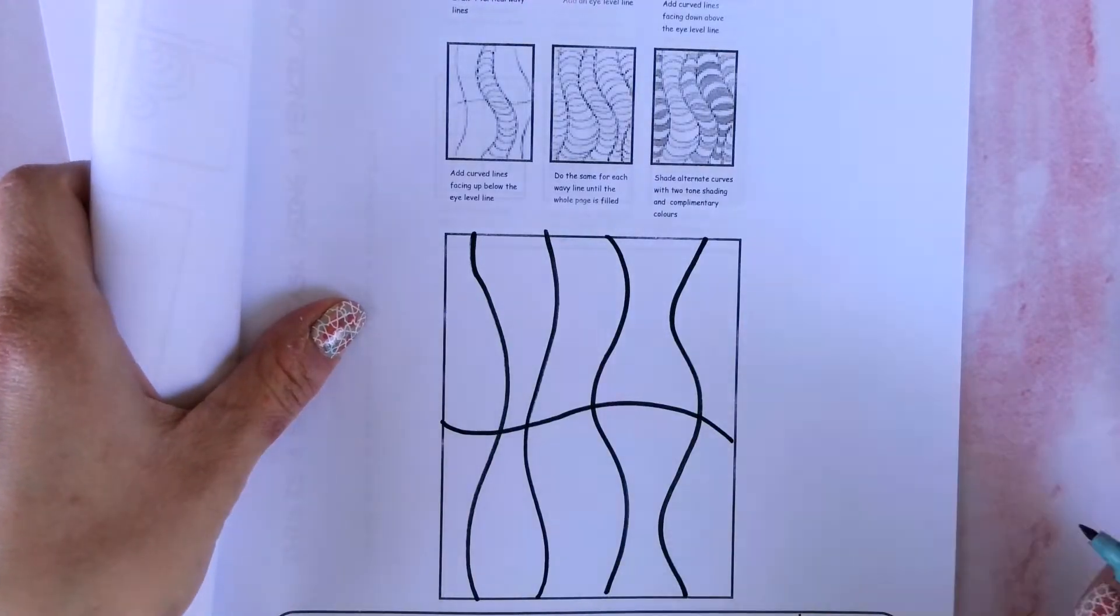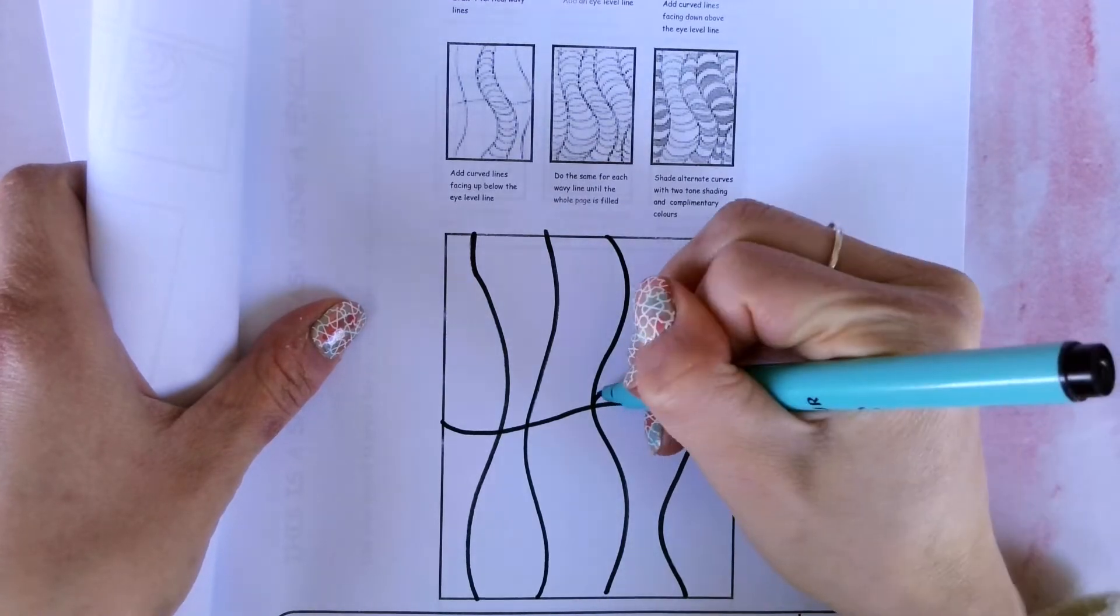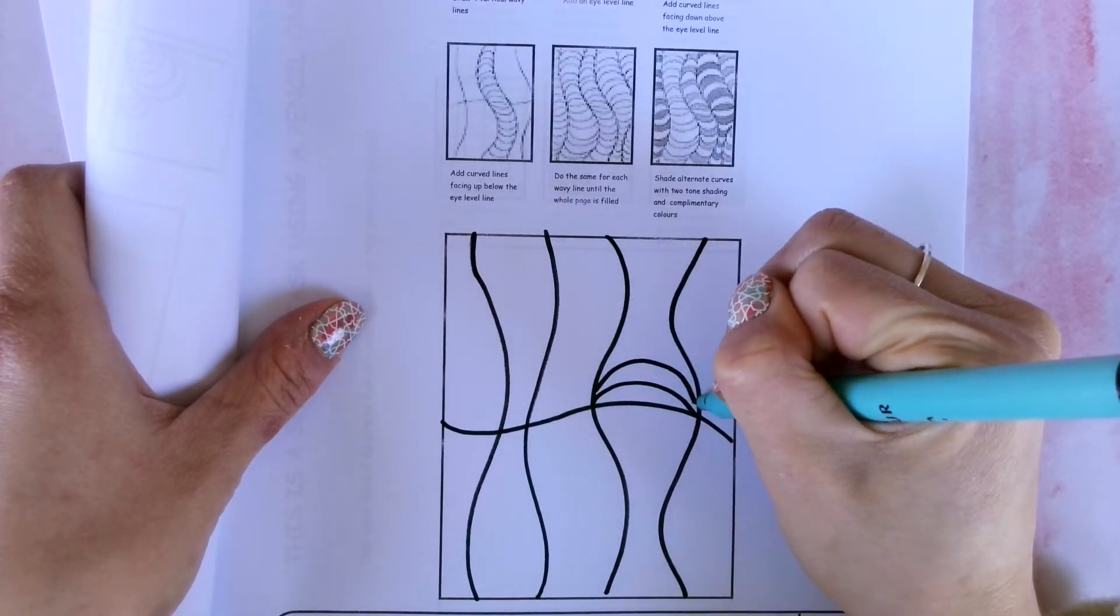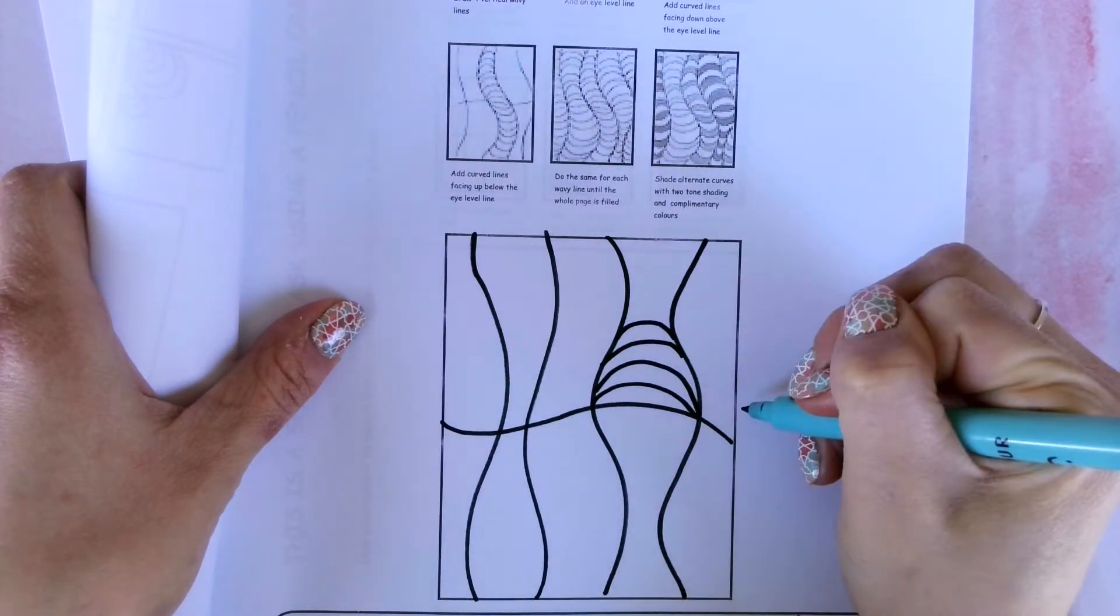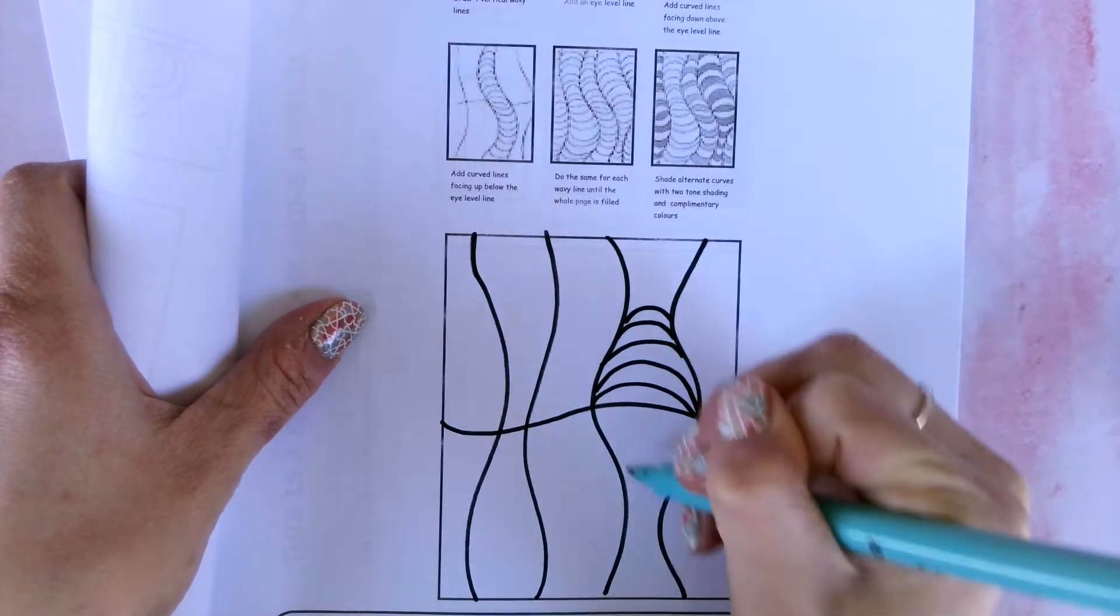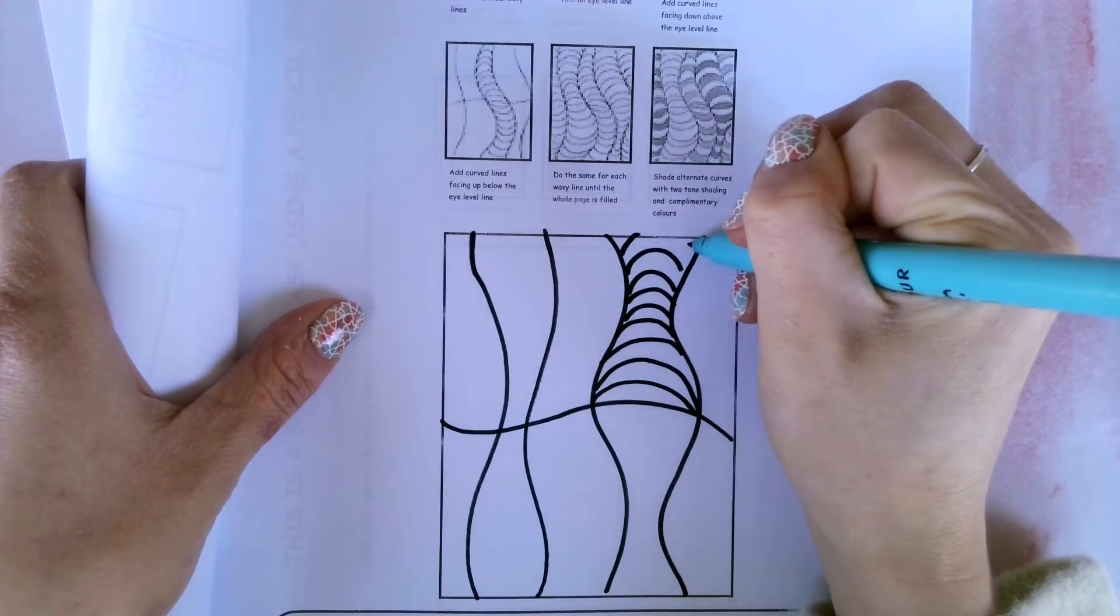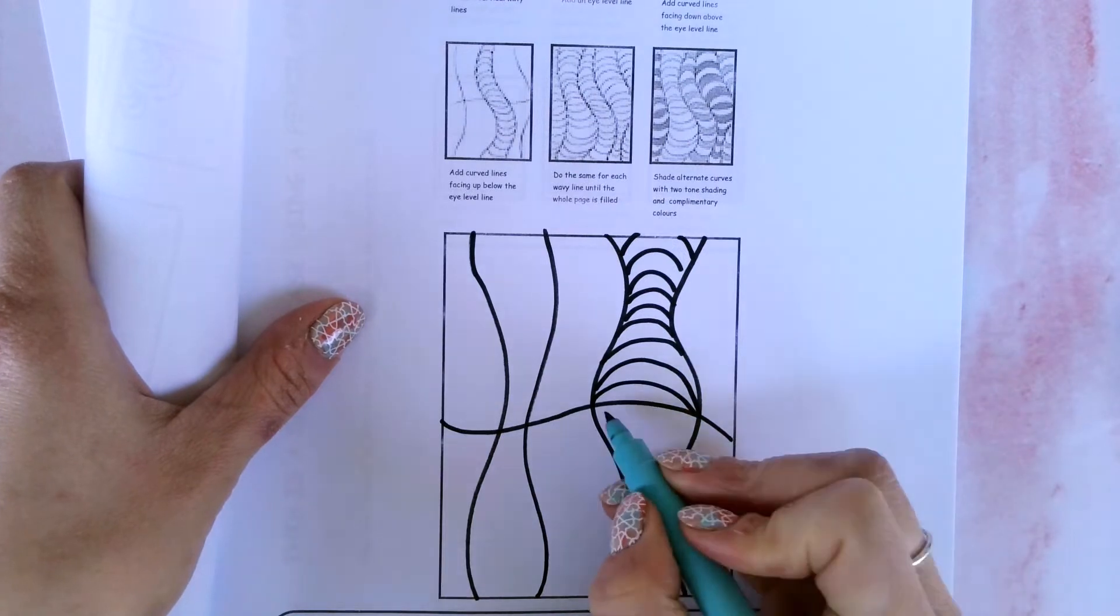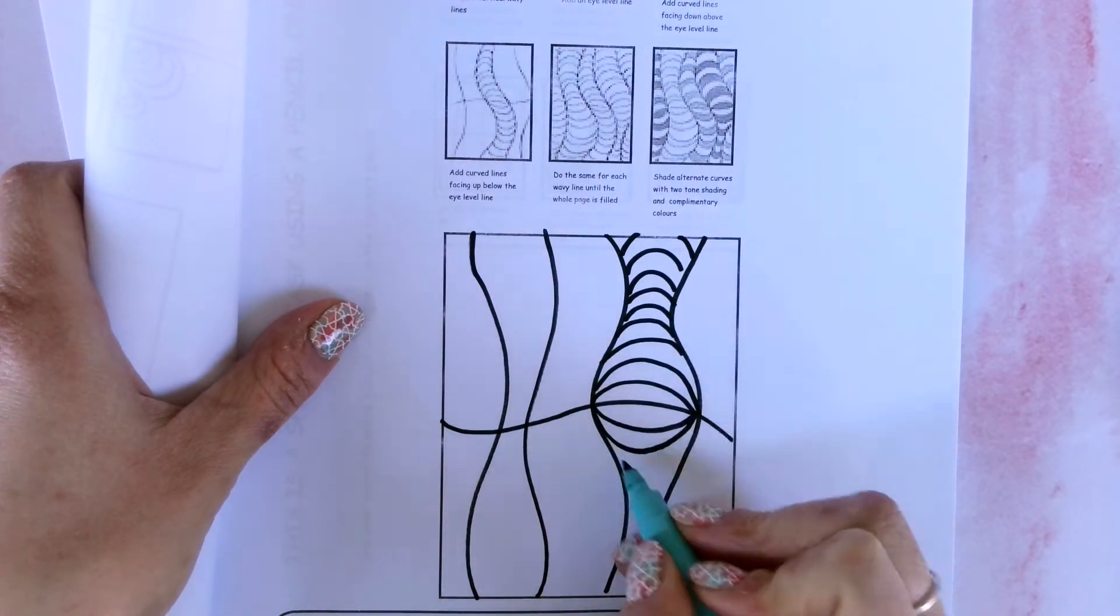Now this next step is really important. You need to draw lines that are curving towards the eye line. So they're curving towards the eye line. And then repeat it underneath, going in the opposite direction. So going away from the eye line here.